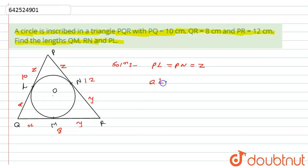I can say that QL equals QM equals X and similarly RN equals RM equals Y. Now if you look at the diagram, PQ is combination of PL plus LQ. So can I write PQ equals PL plus LQ. Now PL is Z and LQ is X. So PQ equals Z plus X. Let's, this is equation number 1.